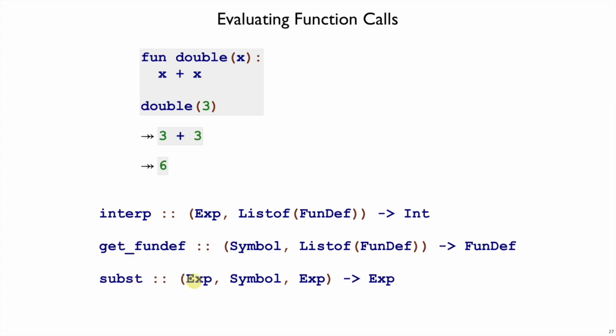It takes an expression that we're sending in, which corresponds to 3 in this example, a symbol that we're replacing, which corresponds to the argument x here of the function double, and an expression that we're replacing into, like the x plus x, and then it should give us an expression back, like 3 plus 3.